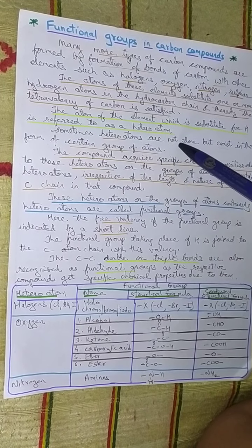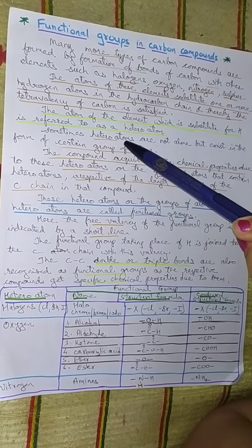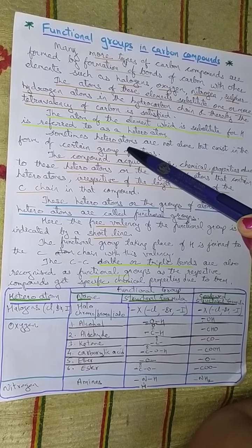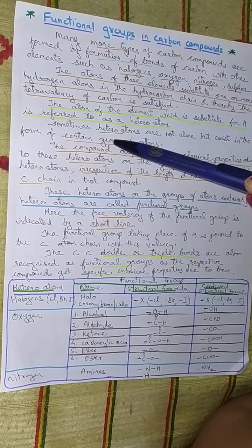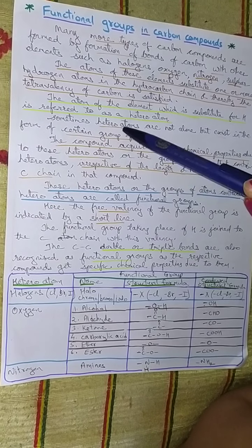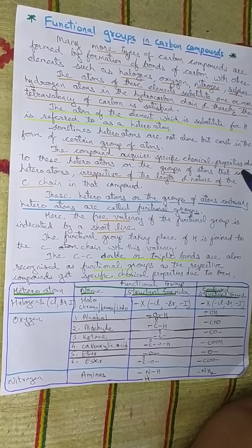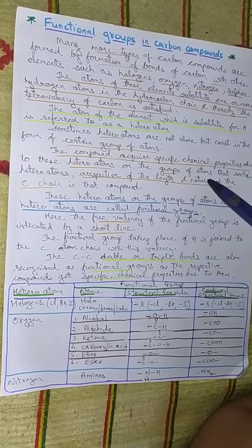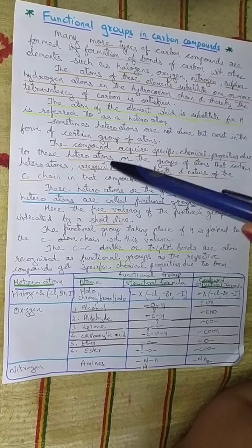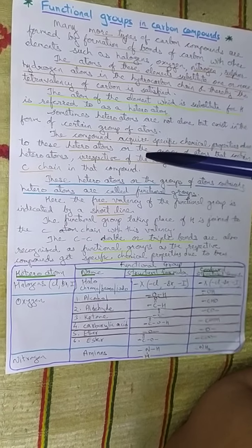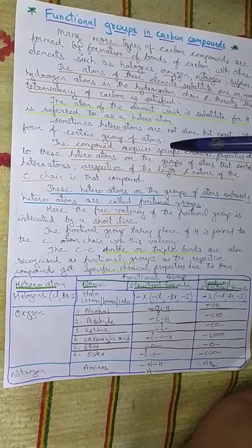Sometimes heteroatoms are not alone but exist in the form of a certain group of atoms. For example, if oxygen is the heteroatom, it may be in the form of OH, or it may be in the group COOH. The compound acquires specific chemical properties due to these heteroatoms or groups of atoms containing heteroatoms, irrespective of the length and nature of the carbon chain. When the properties change, a new compound is formed.